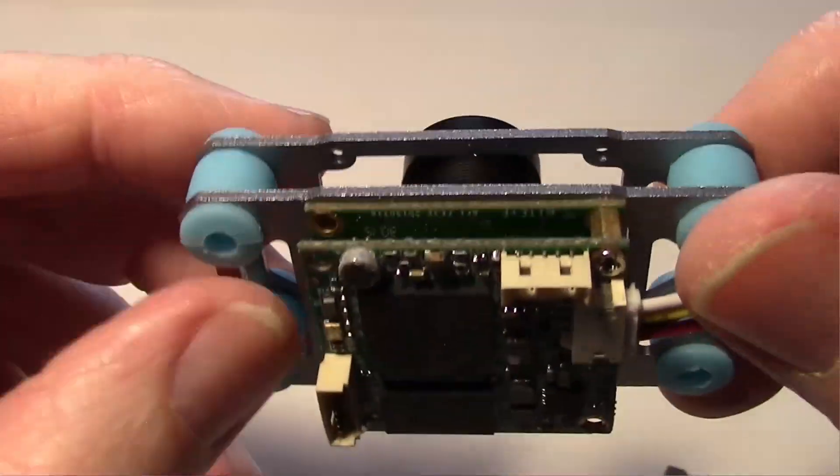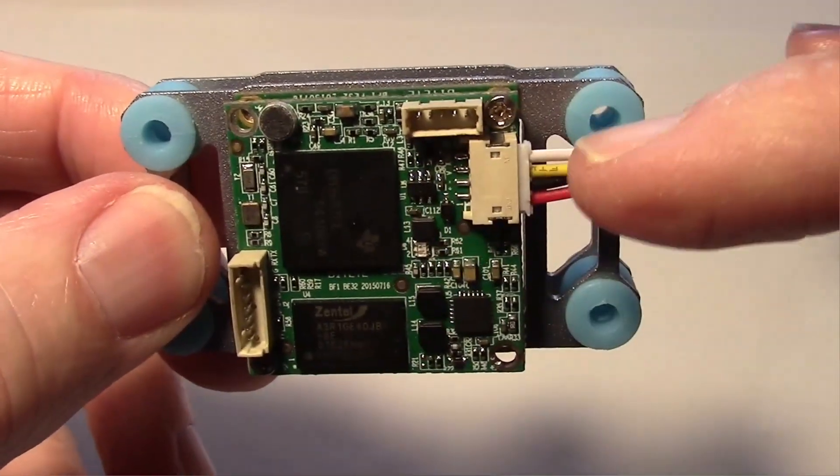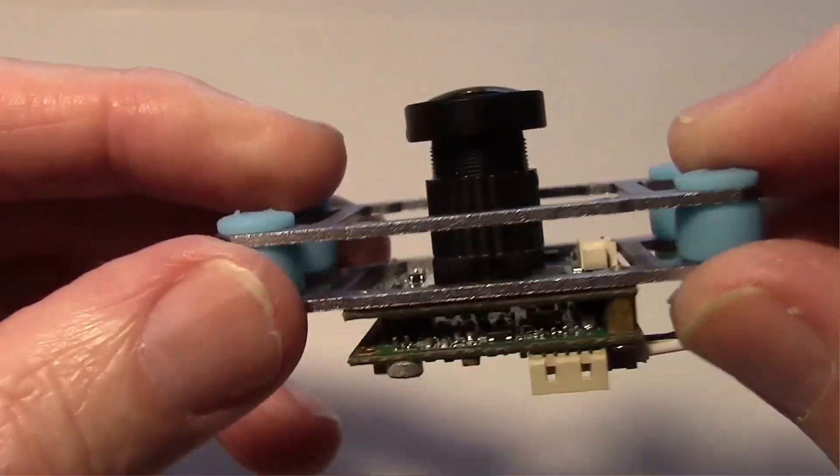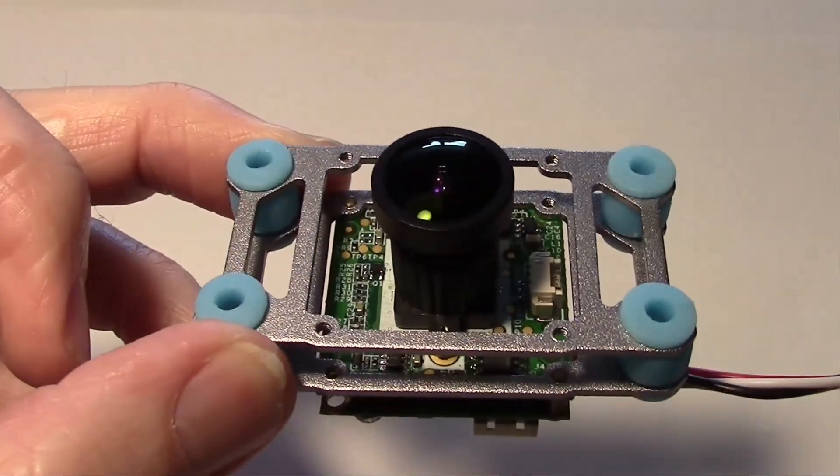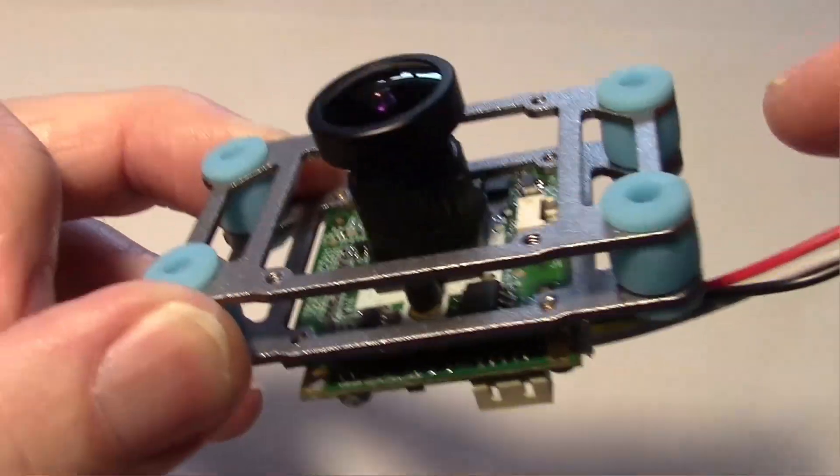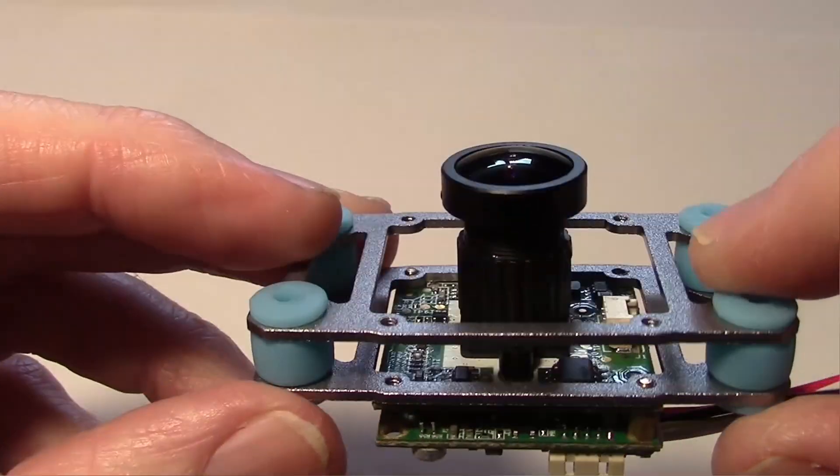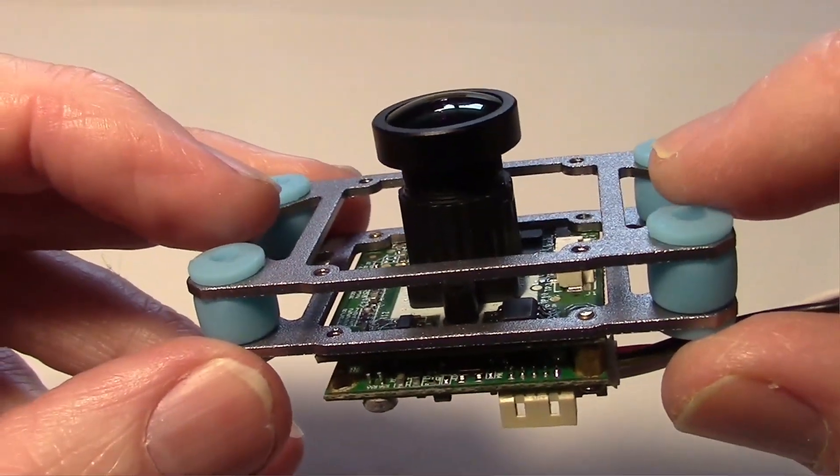So this is similar to the Mobius. In fact it can record HD at 30 frames a second but it has much lower latency. I think the Mobius is like around 128 milliseconds and this is only 60 milliseconds on the latency.